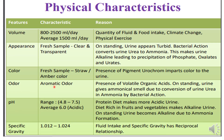The odor of normal urine is aromatic. The presence of volatile organic acids gives this odor to urine. On standing, the urine gives an ammoniacal smell due to conversion of urea present in urine into ammonia by bacterial action.